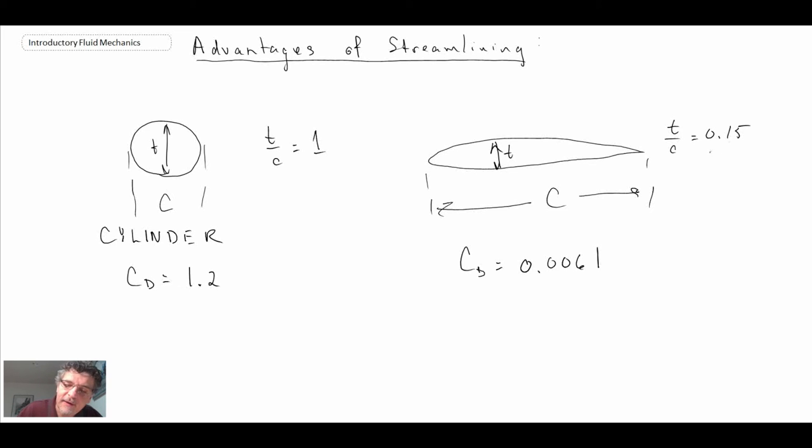Granted, it is much thinner than the cylinder, but there are other things going on. Mainly what's happening here, the boundary layer is very different on these two bodies, especially in relation to where it may separate from the body.